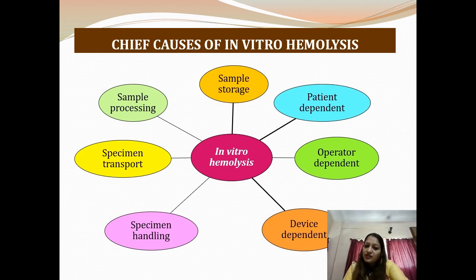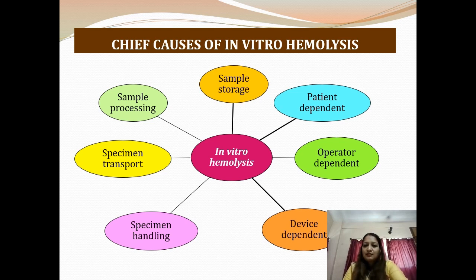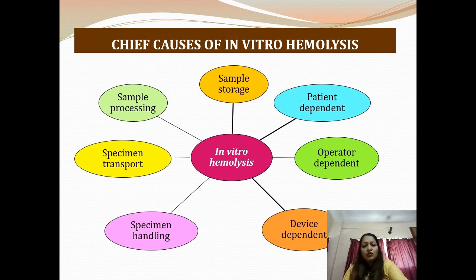The chief causes of in vitro hemolysis include very rough specimen transport and handling, faulty processing of the sample, incorrect storage temperature, and patient-dependent factors — such as patients moving their hands during collection or having fragile RBCs. It also depends on the operator handling the sample and is often device dependent.